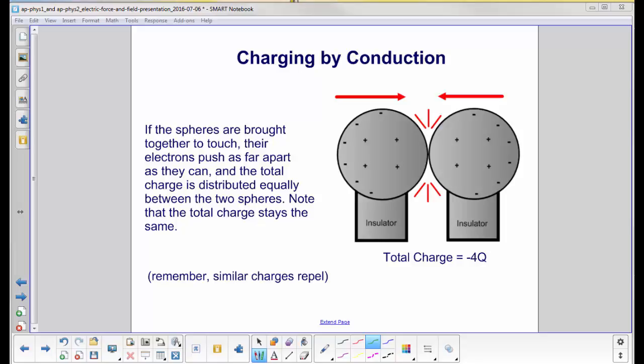However, the total charge of the system, if you add up all the positives, here are the eight positives, and you subtract the negatives, you still have a total charge of negative 4q. The charge is conserved. It's not going anywhere.